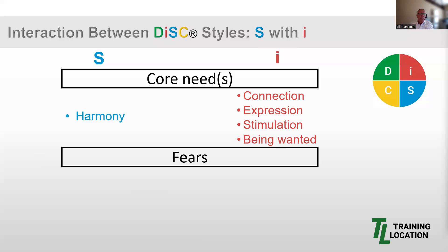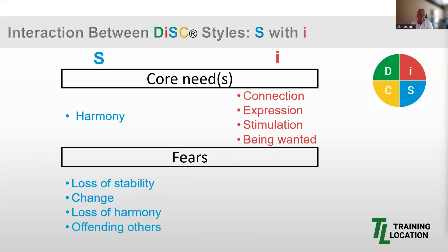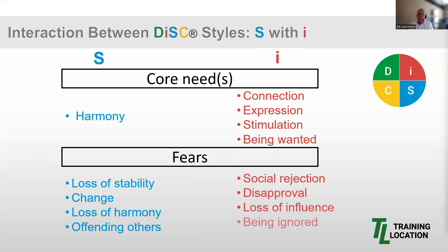To further help clarify these styles, let's look at their fears. The S fears loss of stability, change — especially rapid change — loss of harmony, and a fear of offending others. They gravitate back toward a stable status quo. The I fears include social rejection, disapproval, loss of influence, and being ignored. You can start to understand how the S's need for harmony, coupled with a fear of change, meeting the I's need for expression, quick action, and stimulation — not necessarily a problem, but it could present a challenge for the unaware, requiring stretching from both sides.